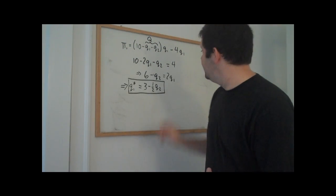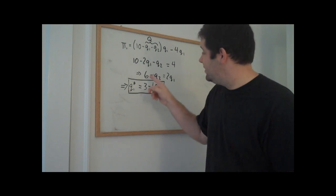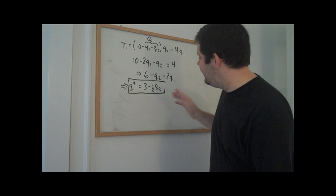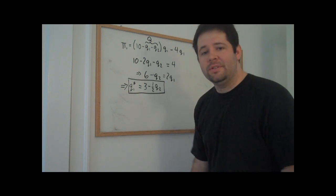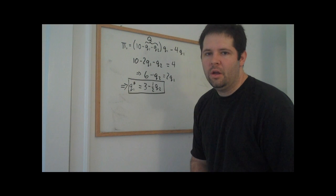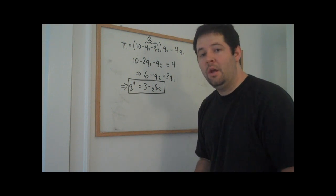In the first line here, I subtracted four from both sides to get six, and I added two Q1 to both sides. And then in the second line, I divided both sides by two to get the solution for Q1. This is the best response function for Q1.